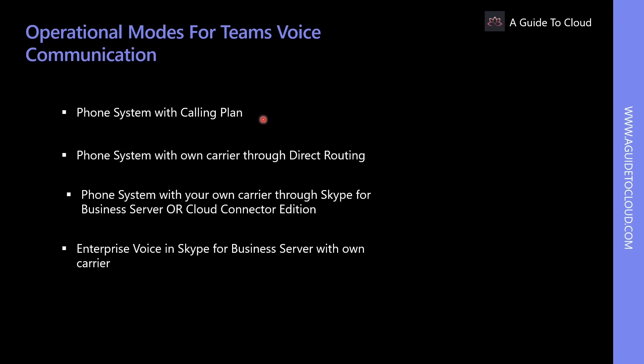The deployment options for voice communication with Teams include: Phone System with Calling Plan — where licensed users can call numbers in their country or region or international numbers in 196 countries; Phone System with their own carrier through Skype for Business Server or Cloud Connector Edition; and Enterprise Voice in Skype for Business Server with their own carrier, which is the most complex option to deploy and maintain.